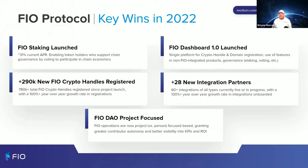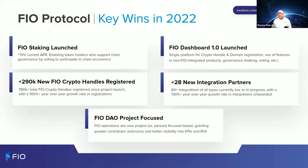This year we brought in over 28 new integration partners, with 60-plus integrations live or in progress and 130% year-over-year growth in integrations. The FIO DAO is now project-focused rather than person-focused, granting greater contributor autonomy and better visibility into KPIs and ROI. Anyone can make a proposal to the steering committee to work on the FIO Protocol, and we have a good way to track the whole ecosystem.